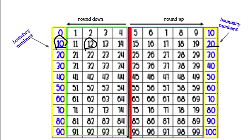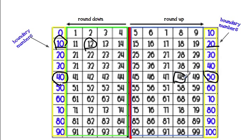Let's look at another one — 48. I look at the two boundary numbers, meaning 48 comes in between 40 and 50. Then which one is it closest to? 48 is closest to 50. So 48 rounded to the nearest 10 would be 50.